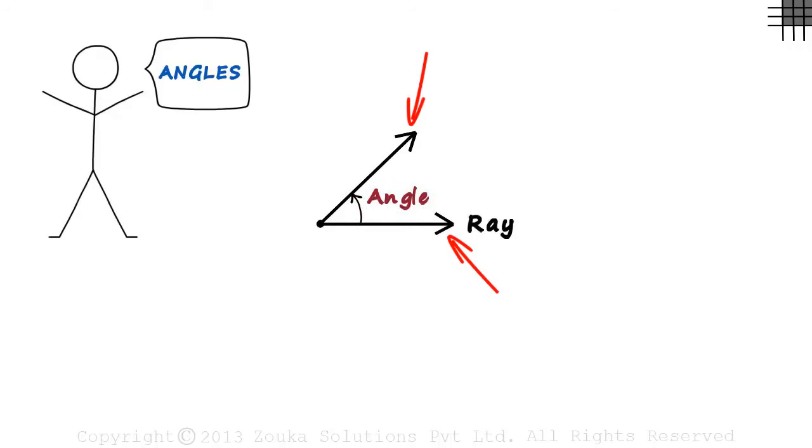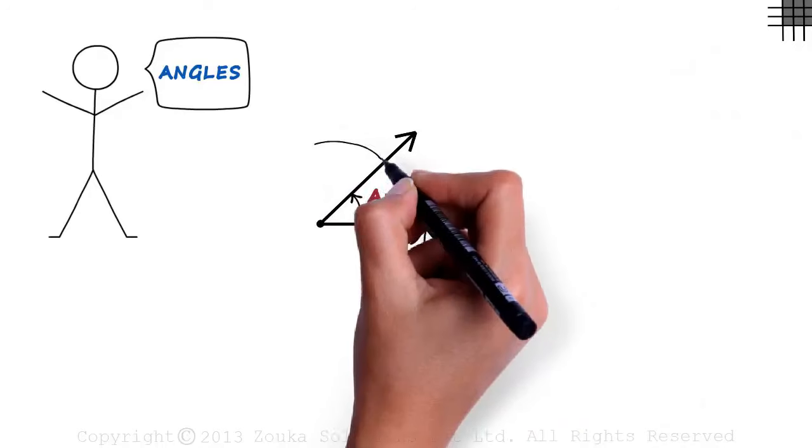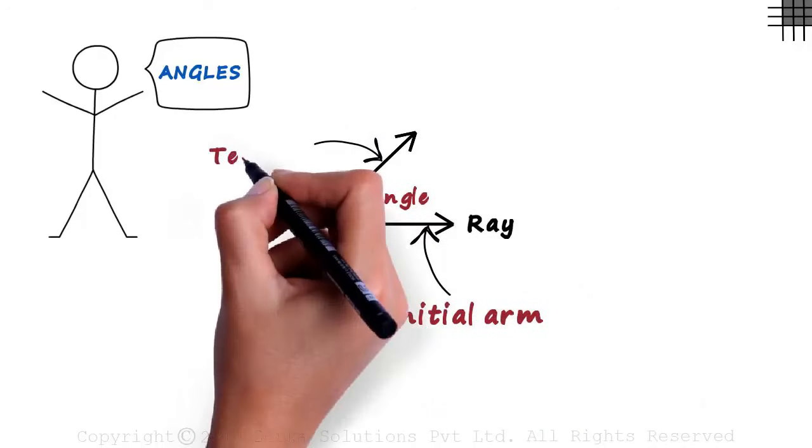What are these two rays called? These two rays are called the arms of the angle. This arm where the angle starts is called the initial arm and this arm where the angle ends is called the terminal arm.